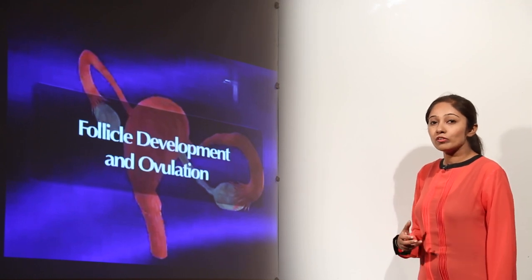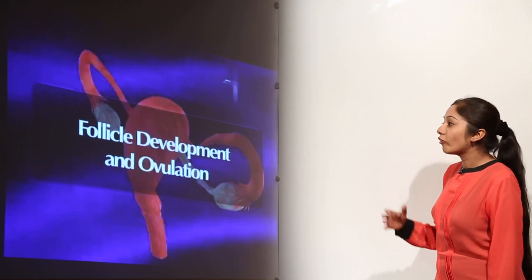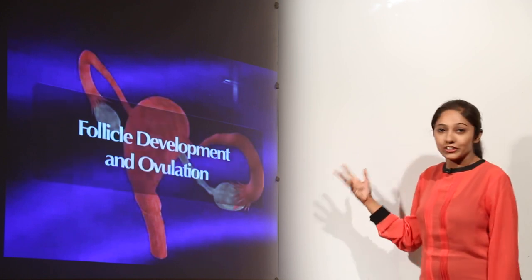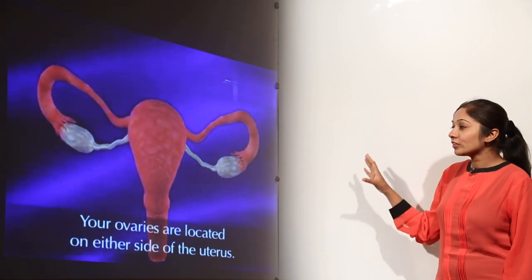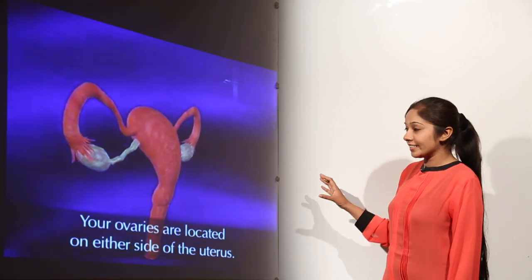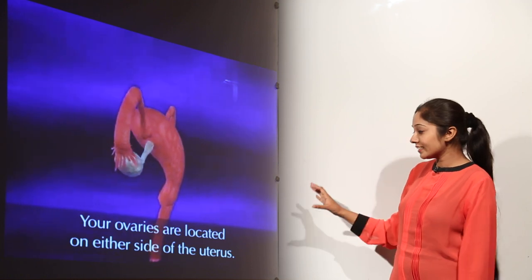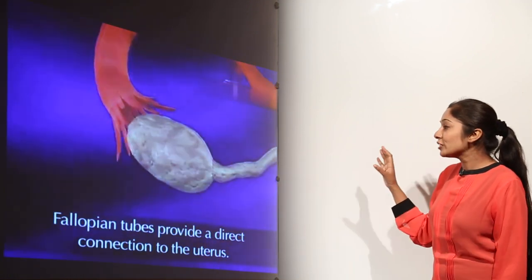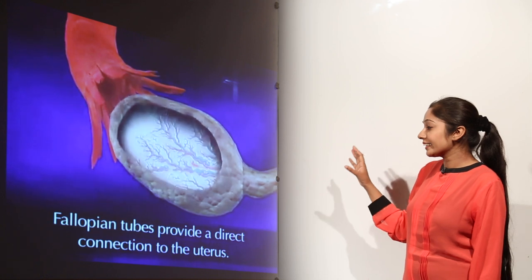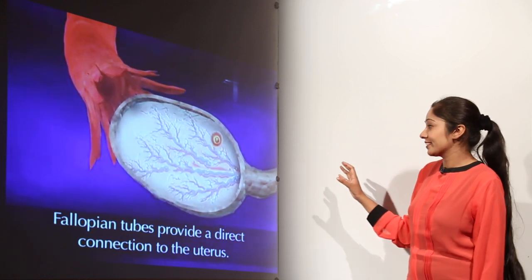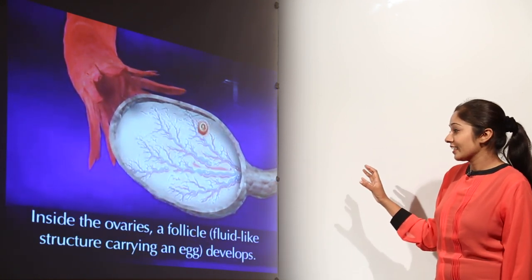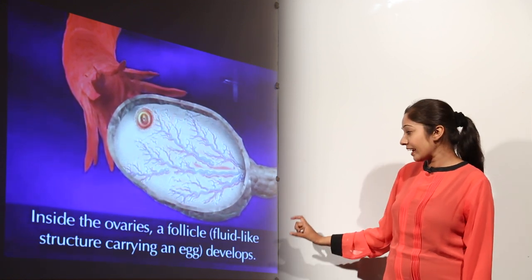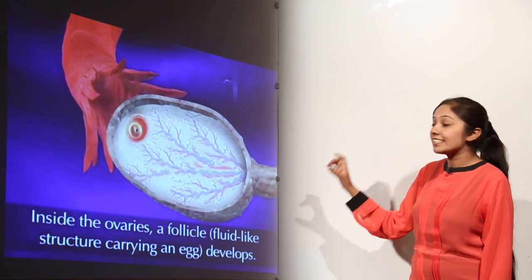Let us have an overview of follicle development and ovulation. Your ovaries are located on either side of the uterus, and fallopian tubes provide a direct connection to the uterus. Inside the ovaries, a follicle — a fluid-like structure carrying an egg — develops.